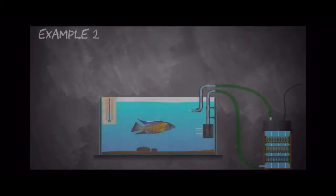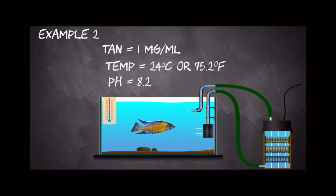Now in our second example, the TAN measured is still the same, so we have that 1 ppm. However, instead of discus, we have African cichlids in this aquarium, which is maintained with a much higher pH of 8.2 and a temperature of 24 degrees Celsius, or 75.2 degrees Fahrenheit.